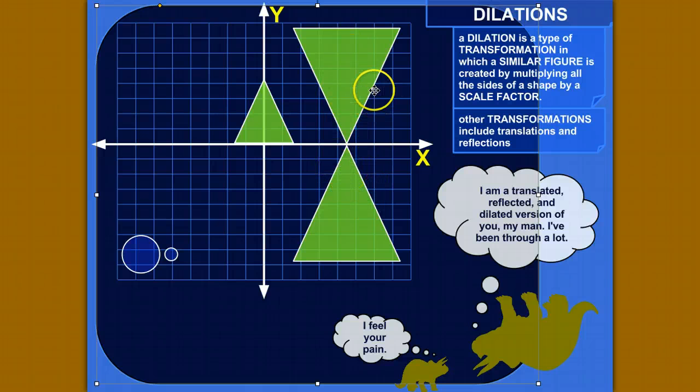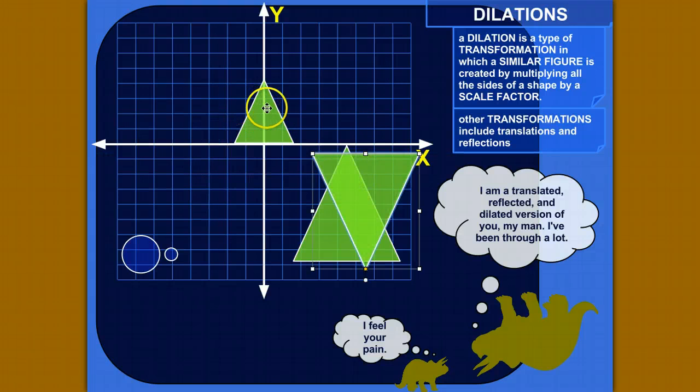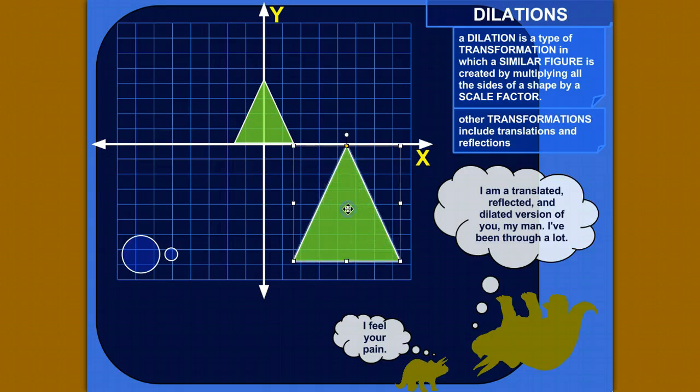So translations, reflections, rotations, and dilations are all ways of manipulating objects, so that they're different from what you start with, but related in certain specific ways.